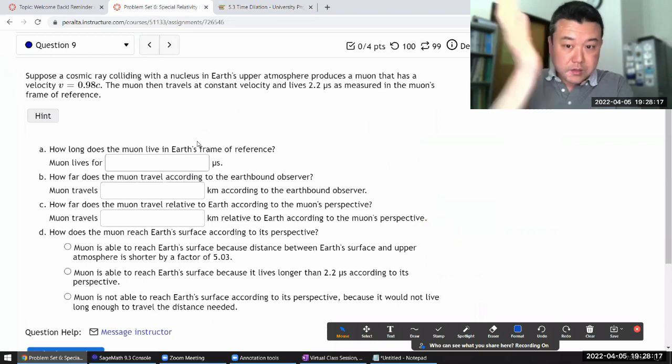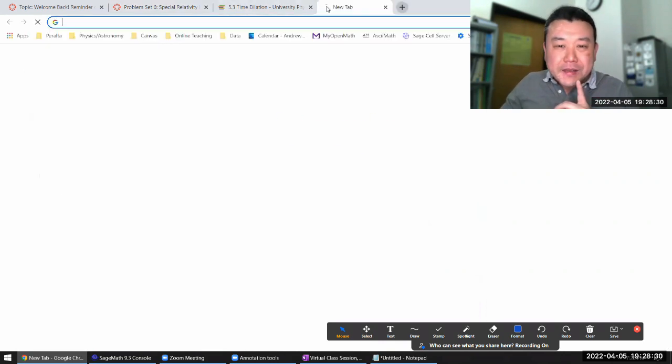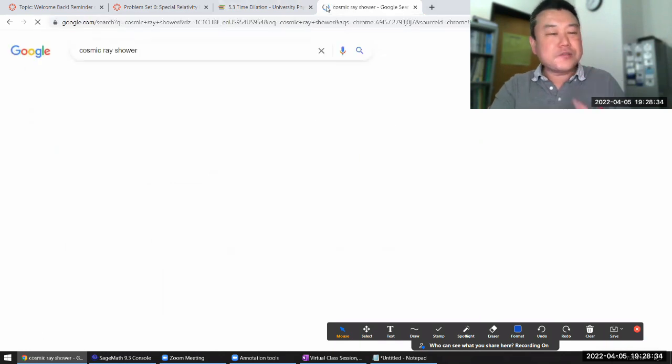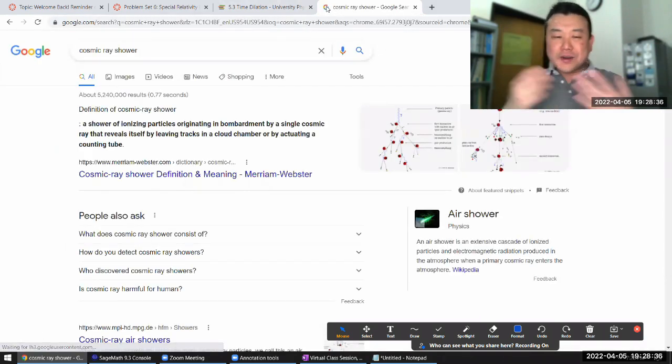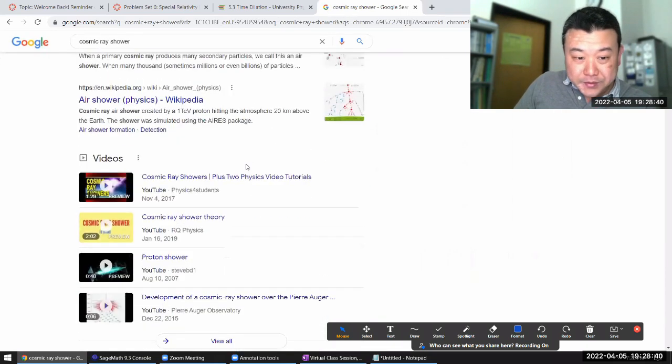Let's just work through it. It says, suppose a cosmic ray colliding with the nucleus in Earth's atmosphere. Let me just show you the image so that cosmic ray shower, so that when it describes this production of muon in the upper atmosphere, you have some picture to associate with.